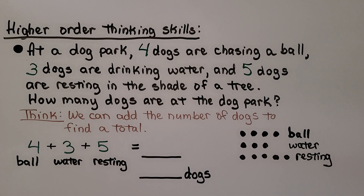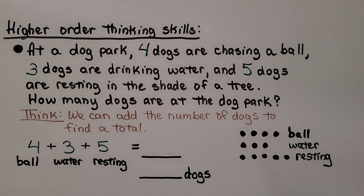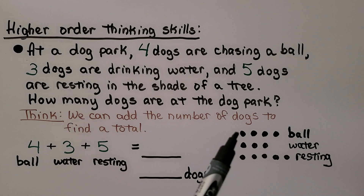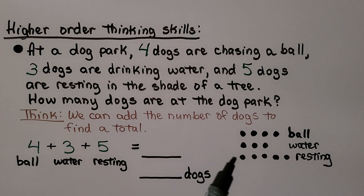Let's try some higher order thinking skills. At a dog park, four dogs are chasing a ball, three dogs are drinking water, and five dogs are resting in the shade of a tree. How many dogs are at the dog park? We can add the number of dogs to find a total — we have three addends. We have four counters for dogs chasing a ball, three counters for dogs drinking water, and five counters for dogs resting in the tree.